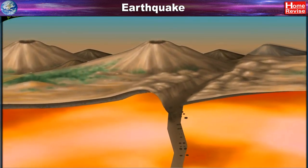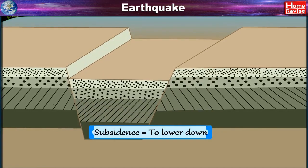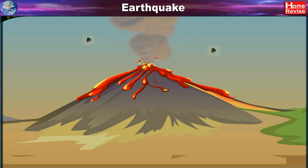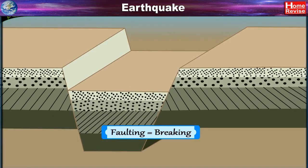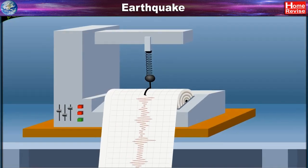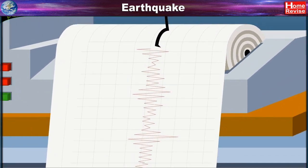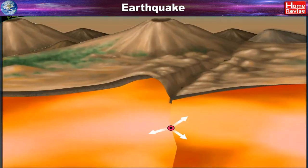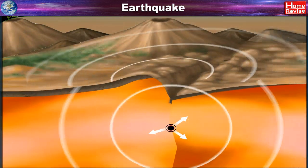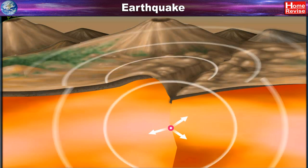Earthquakes occur due to the movement of plates — their passage, collision with one another, subsidence (lowering down), eruption of volcanoes, and faulting (breaking). The magnitude of an earthquake is measured on the Richter scale with the help of an instrument called a seismograph. The point below the surface where energy is released during an earthquake is called the focus.